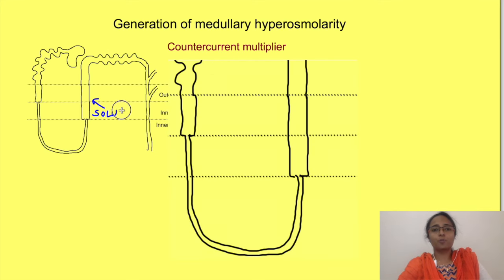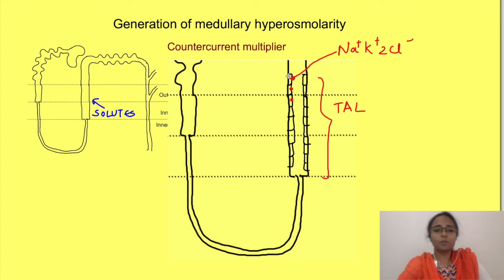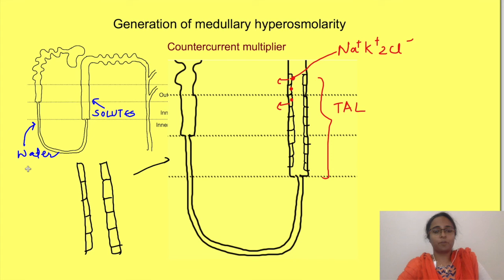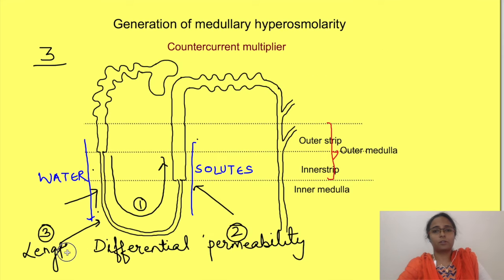Permeability in the thick ascending limb to solutes is by active transport. The sodium-potassium-2-chloride transporter on the apical membrane of thick ascending limb cells absorbs these ions, which ultimately move to the medullary interstitium via the basolateral membrane. Permeability to water in the descending limb is passive — water moves passively to the side of higher solute concentration via aquaporin-1 channels on the apical and basolateral membranes. Third, the length of the nephron matters: the longer the nephron, the more hypertonic the medullary interstitium will become.